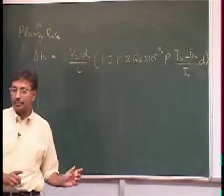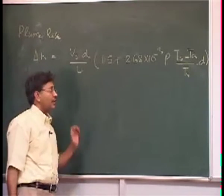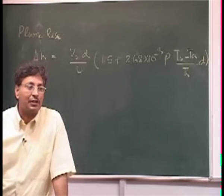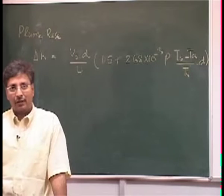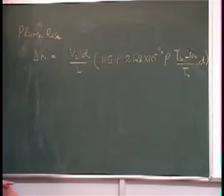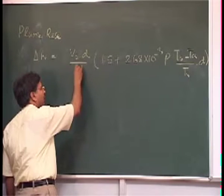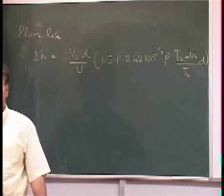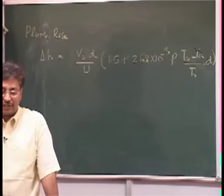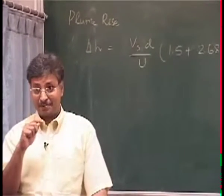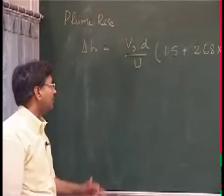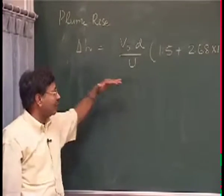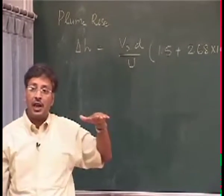We also define the units, because once we write some constants we have to define the units. I want to remind you that what were the units as far as the pressure was concerned? Millibar — always remember that. And the other thing I ask you again and again: this u is at what height? It is at the stack tip — do not forget that, because this is the wind which is influencing my delta H. How much rise will be decided by the horizontal wind at the tip of the stack.